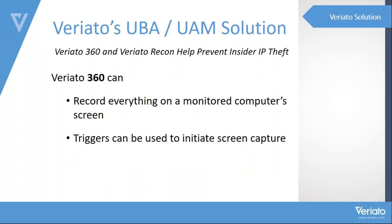With Variato's document tracking features enabled, you can track specific activities on USB drives, network storage, and cloud storage drives. You can see when new files are created and when existing files are edited, renamed, or deleted, and track print operations as well. Variato's screen capture functionality records everything on a monitored computer's screen. You define how frequently to capture — from the default of every 30 seconds to as frequently as every second. Triggers can also initiate screen capture when a user opens a new application, visits a website, or right-clicks the mouse.